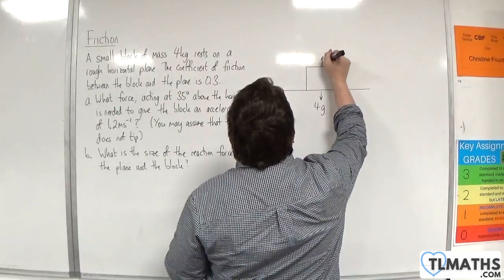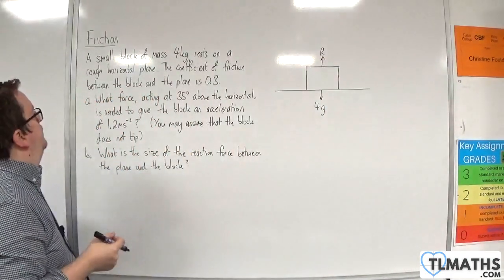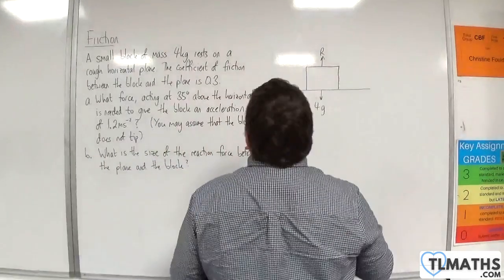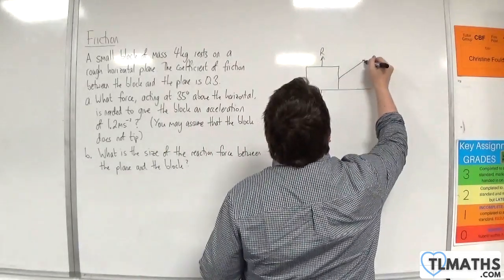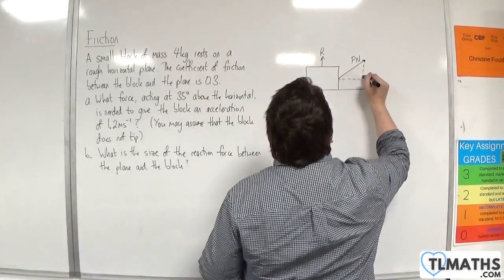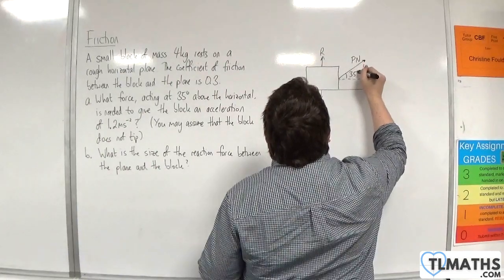There will be a normal reaction force R working vertically upwards. And we have a force acting at 35 degrees above the horizontal. So something like that, let's call that P newtons, and it is working at 35 degrees to the horizontal.